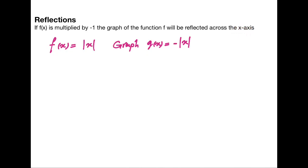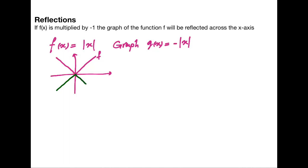Let's see how it looks. We graph f(x) = |x|, the V-shaped absolute value function. To graph g, we reflect f across the x-axis — it's just like a mirror reflection. So the graph of g becomes the upside-down V shape.